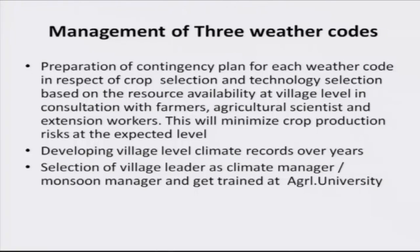Management of weather codes involves preparation of a contingency plan. The contingency plan covers crop selection and technology selection based on resource availability at the village level, in consultation with farmers, agricultural scientists, and extension workers. For drought, avoid planting rice, sugarcane, and banana; for existing plantations, irrigate with less water or adopt drip irrigation. Separate contingency plans should be prepared for drought, flood, and normal code — though normal code does not require a special contingency plan.